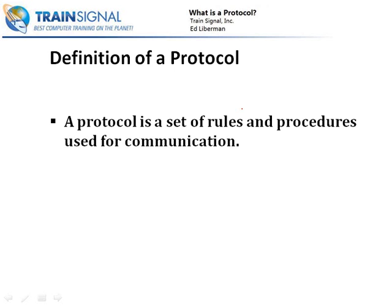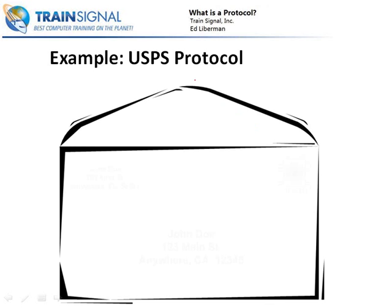Now this definition still may not make complete sense, so I want to use an example to try to explain it better. Let's say that you have a letter that you'd like to send to a friend, and you've decided that you'd like to send this letter via the United States Postal Service. Well, they have a set of rules and procedures for mailing that letter, and we're going to call that the United States Postal Service Protocol.